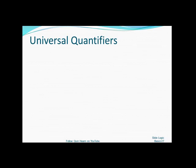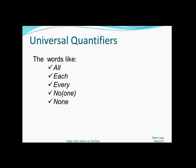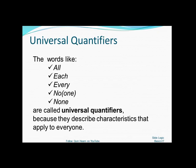Now, what we saw in these examples are words called quantifiers. Words like all, each, every, and none are called universal quantifiers because they describe characteristics that apply to everybody under consideration.